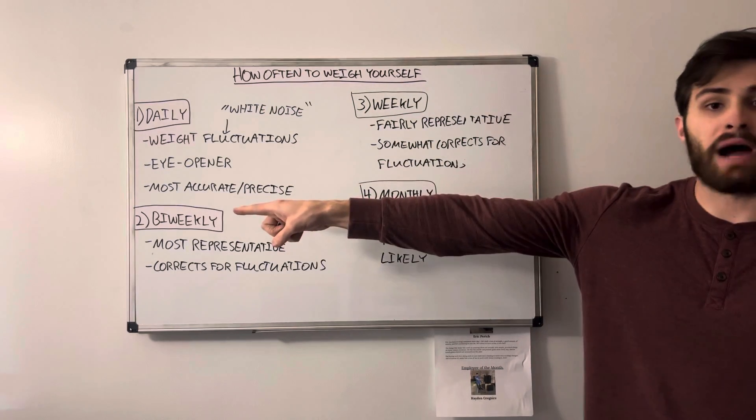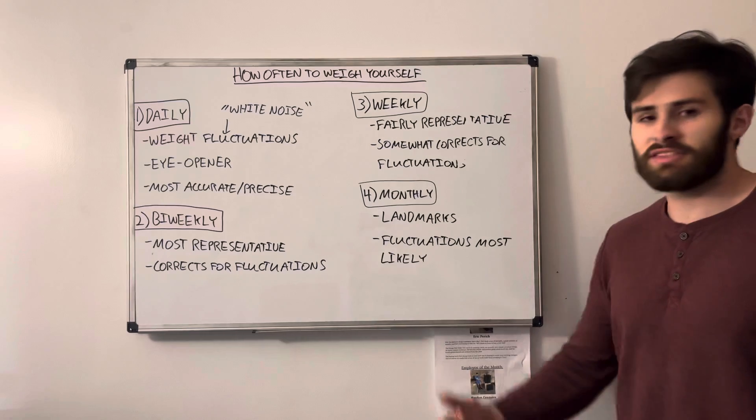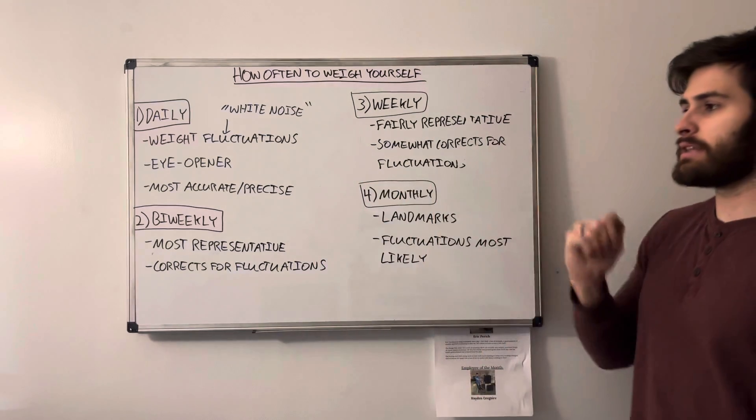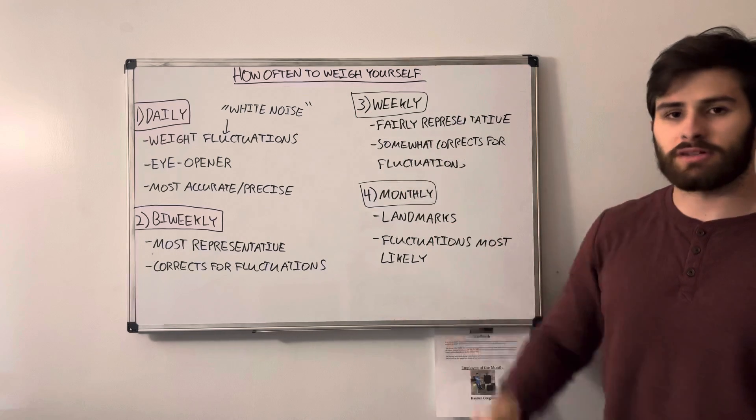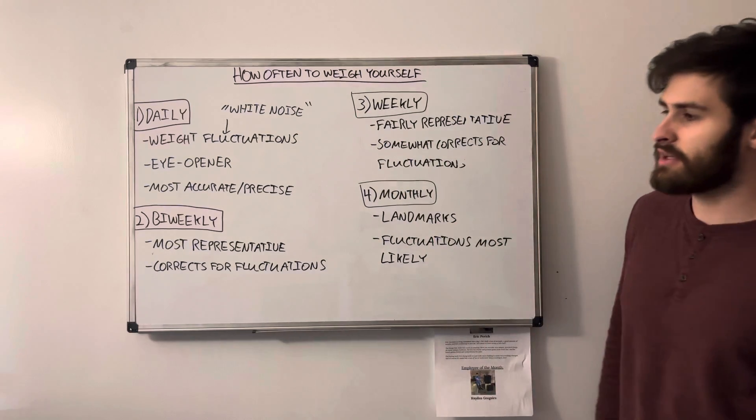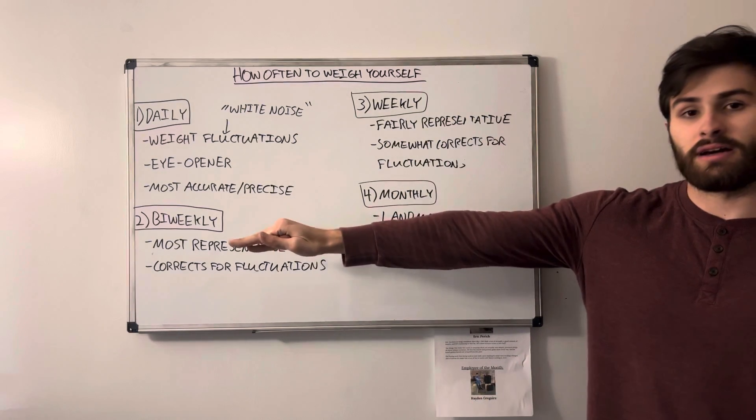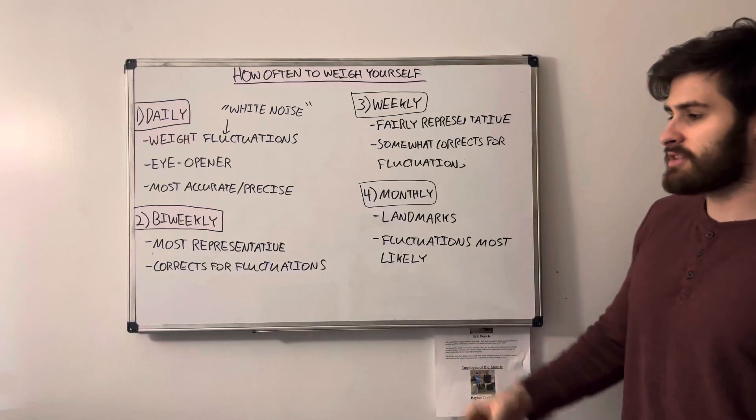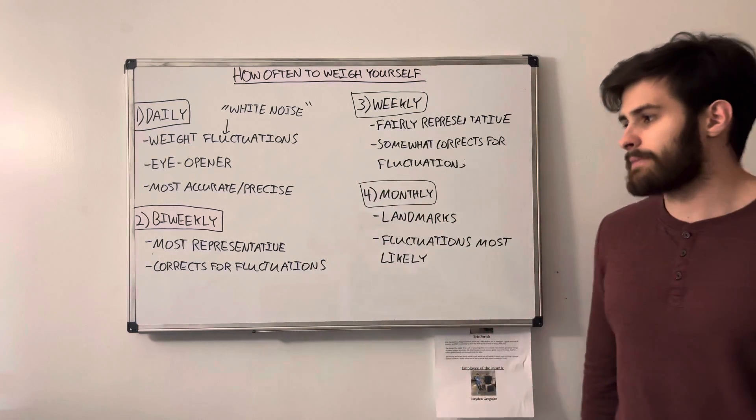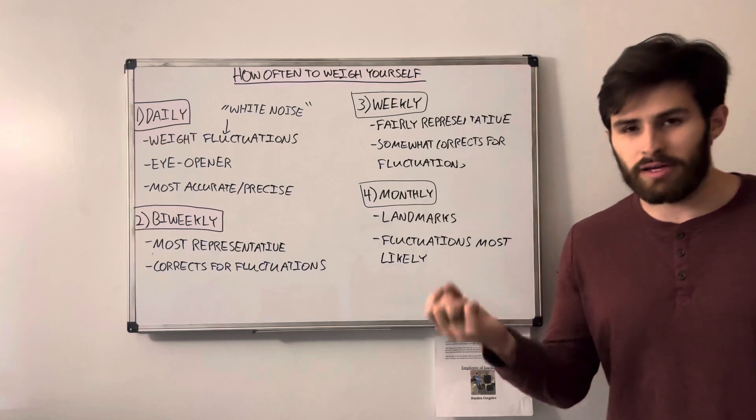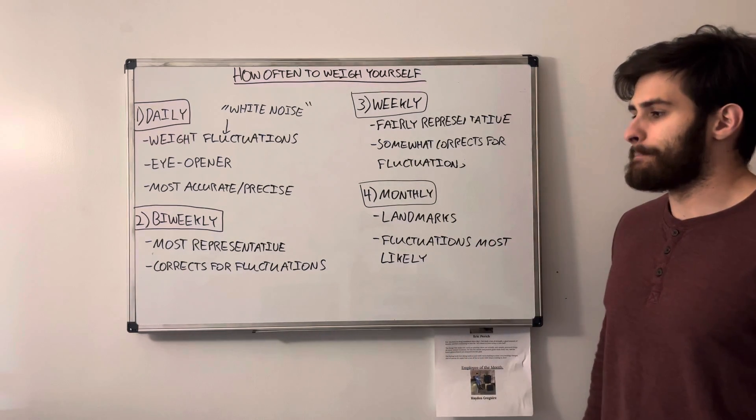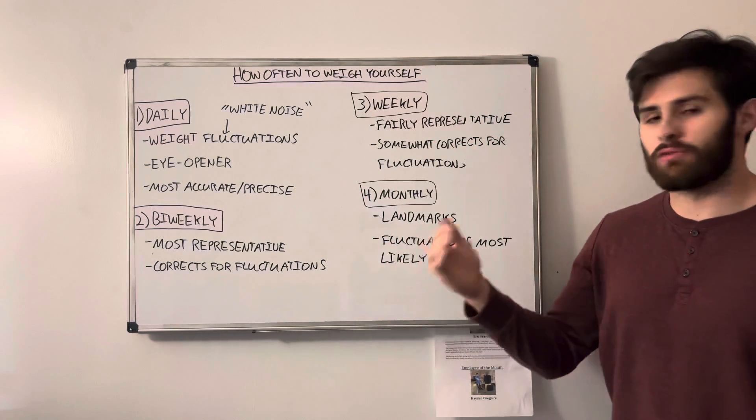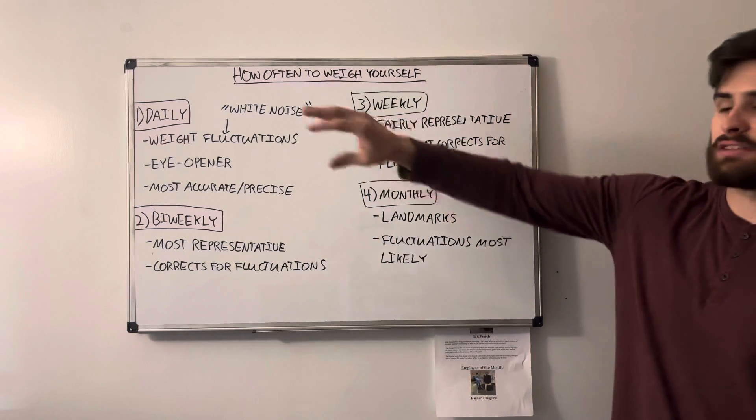Secondly, we have bi-weekly, which is twice a week. This is a couple steps away from daily measurements. So for that reason, it's less prone to fluctuation, so there's not as much white noise. But what this is, for the most part, is that it's the most representative, generally speaking. That's because it's not very infrequent. We have twice weekly measurements. So we get a pretty good picture of where you are without excess fluctuation.